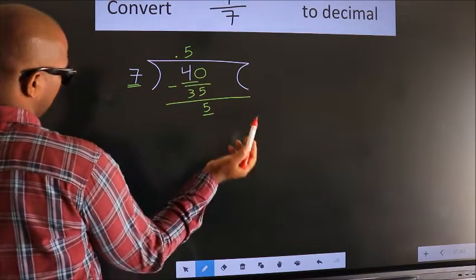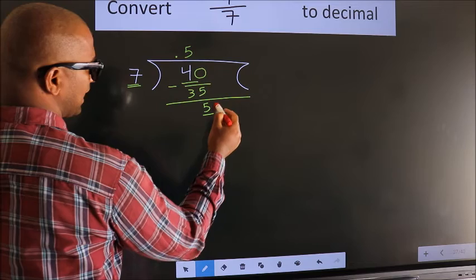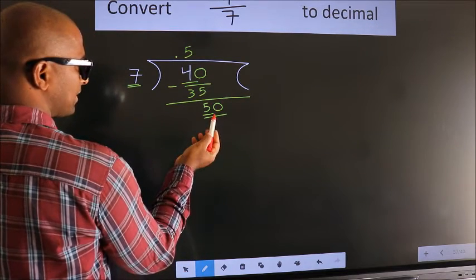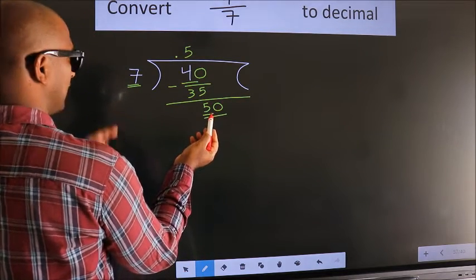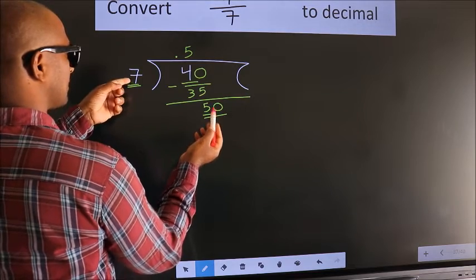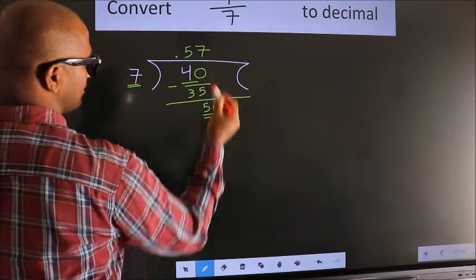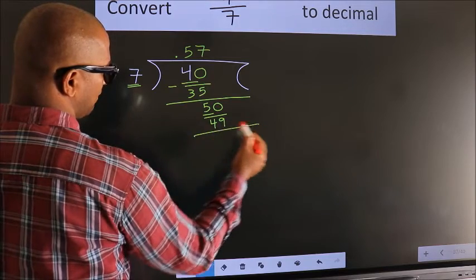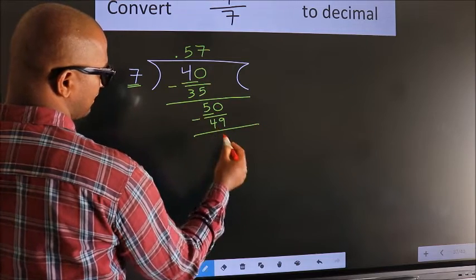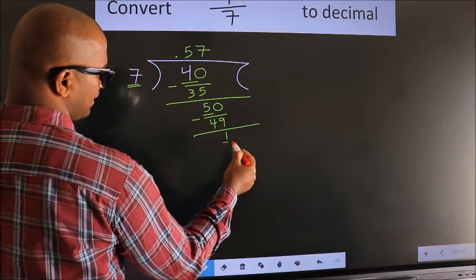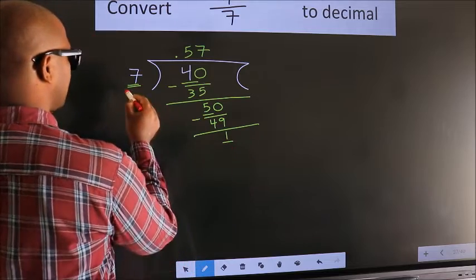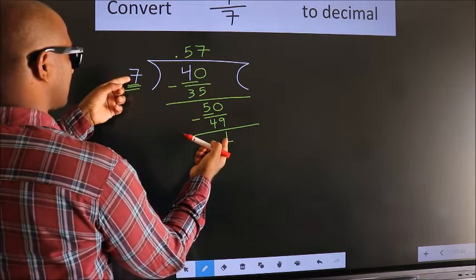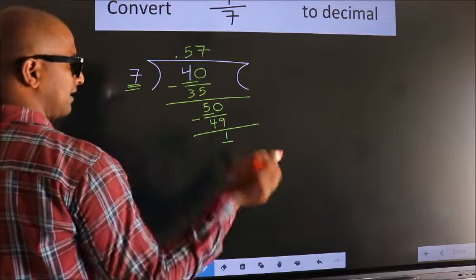We already have the decimal, so we can directly take 0, making it 50. A number close to 50 in the 7 times table is 7 sevens, which is 49. Now we subtract and get 1. Here we have 1, and 1 is smaller than 7.